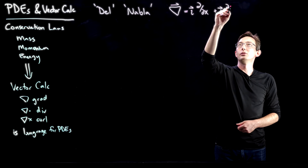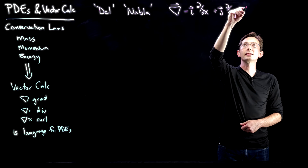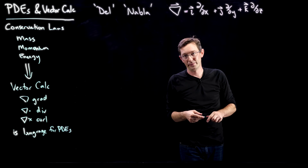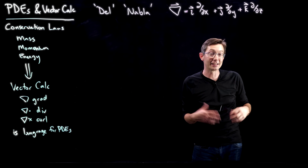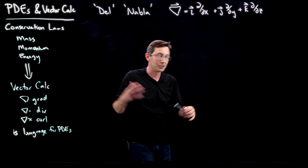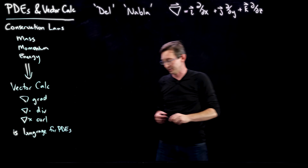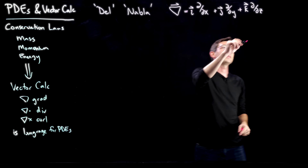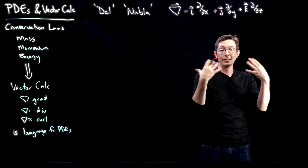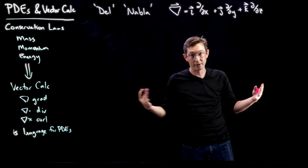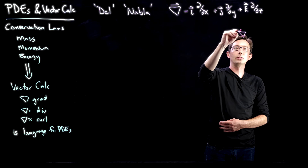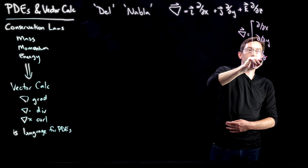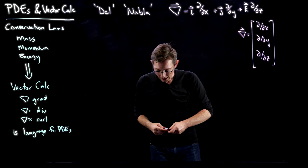Plus in the k direction we have partial/∂z. I just learned that Americans pronounce 'z' as 'zee' because it rhymes in the ABCs, while everyone else in the world calls it 'zed.' So this is the del or nabla operator. Another way to write it is as a vector, and then we can take the dot product or the cross product of that vector with other vectors. Del can also be written as the vector (∂/∂x, ∂/∂y, ∂/∂z).